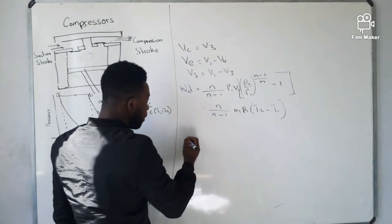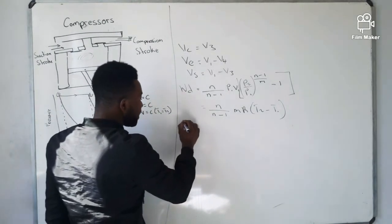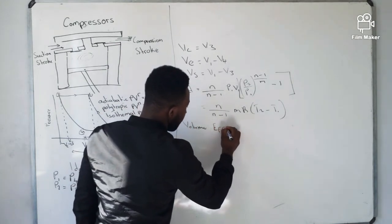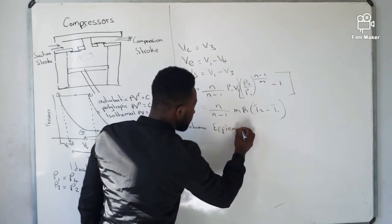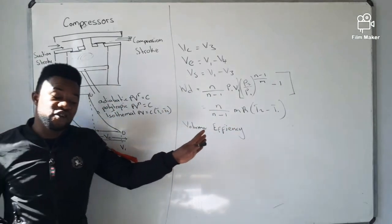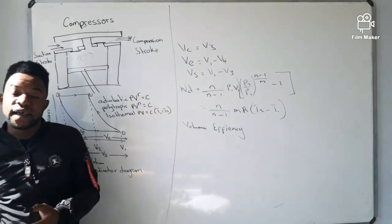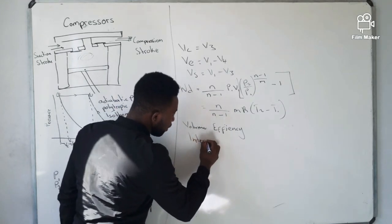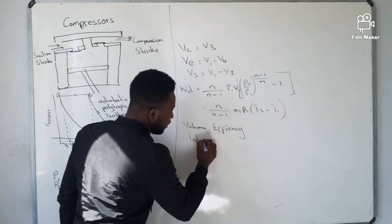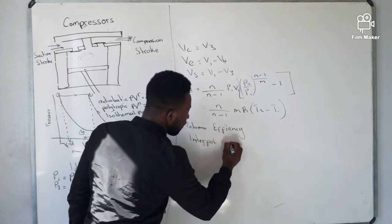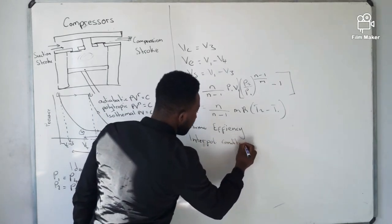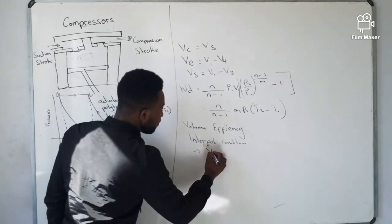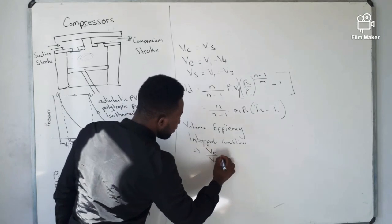We also have the formula to calculate what we call the volumetric efficiency. For volumetric efficiency, there are two formulas depending on the condition given: the internal condition and the atmospheric condition. The first method is the internal condition formula, which is VE over Vs multiplied by 100%, where VE is the effective volume and Vs is the swept volume.